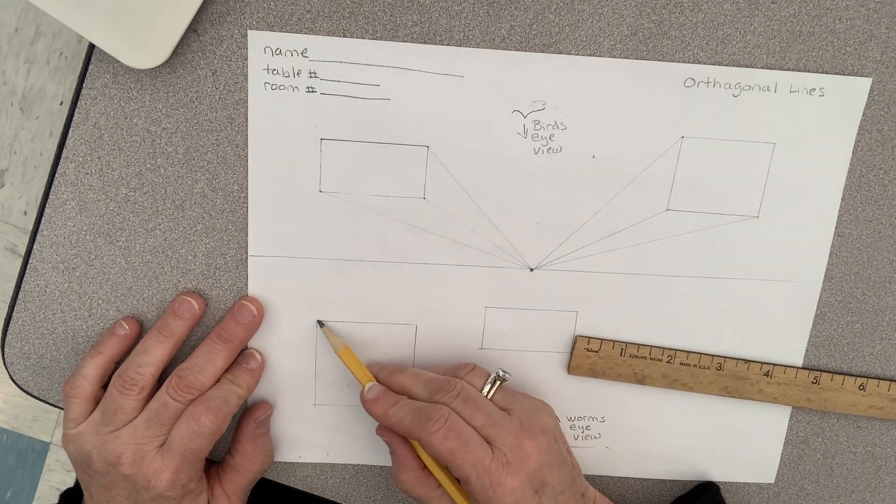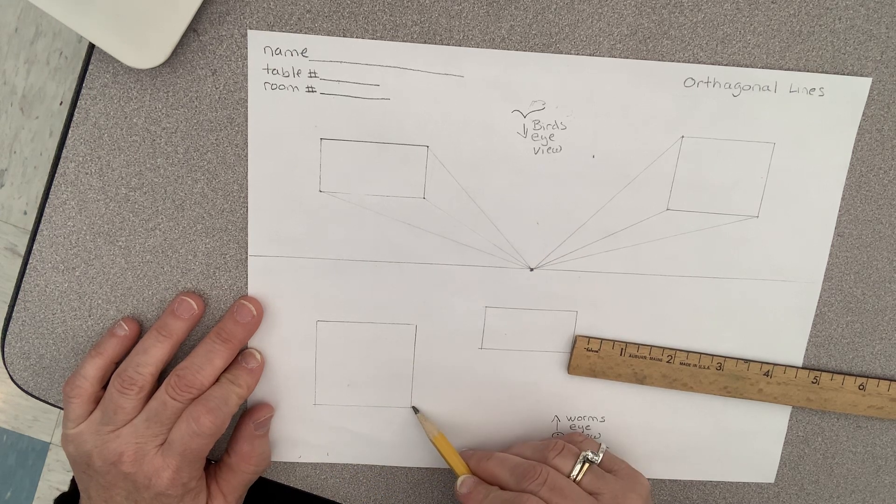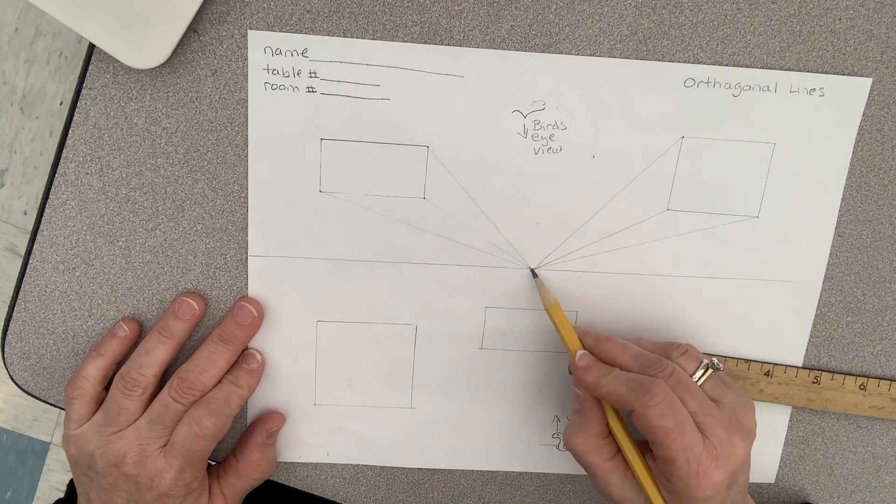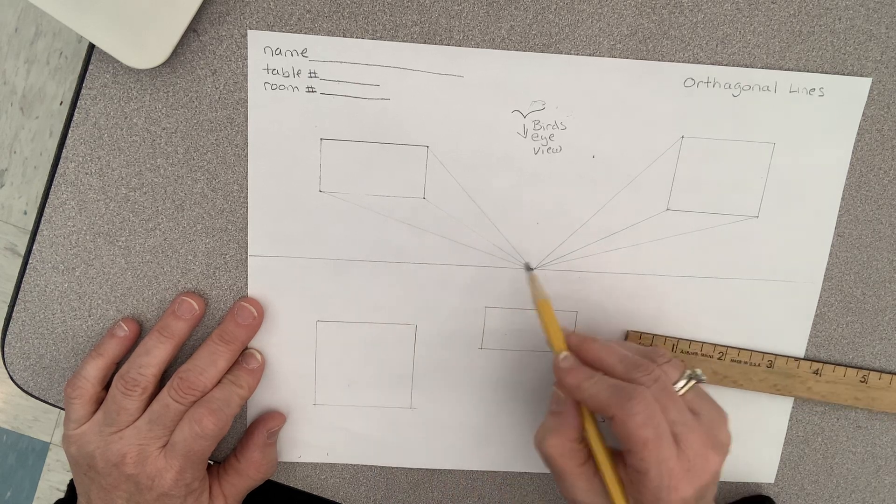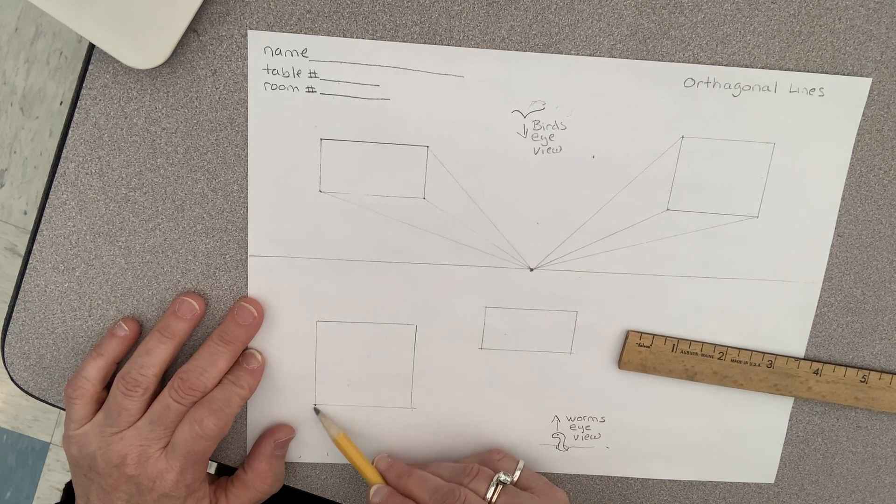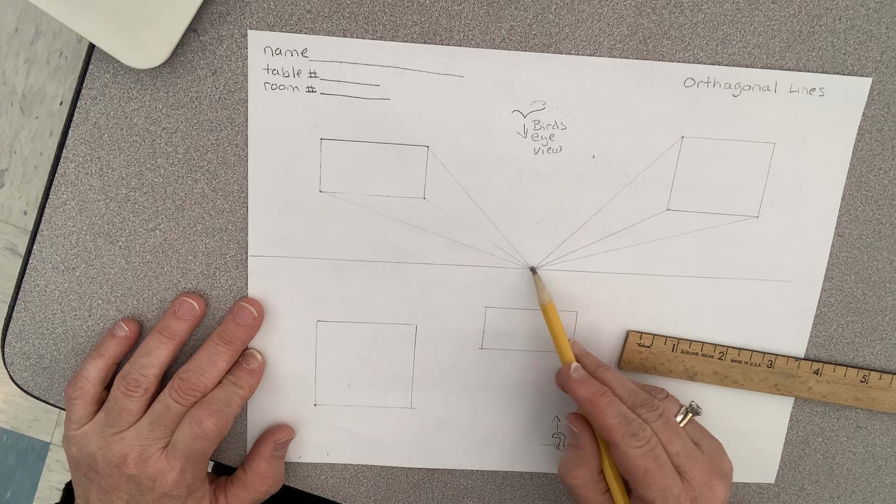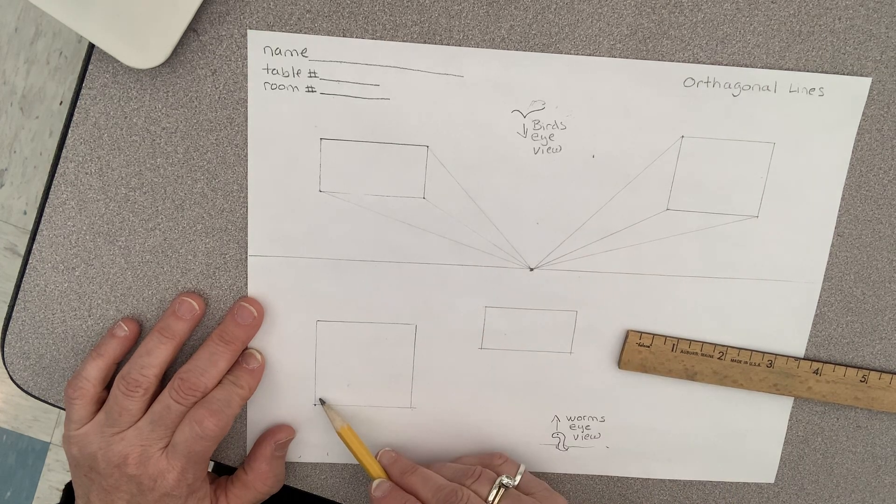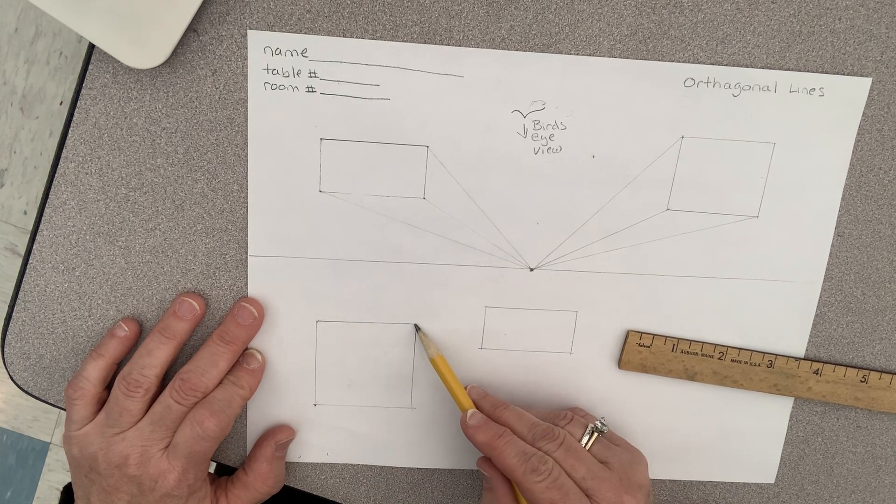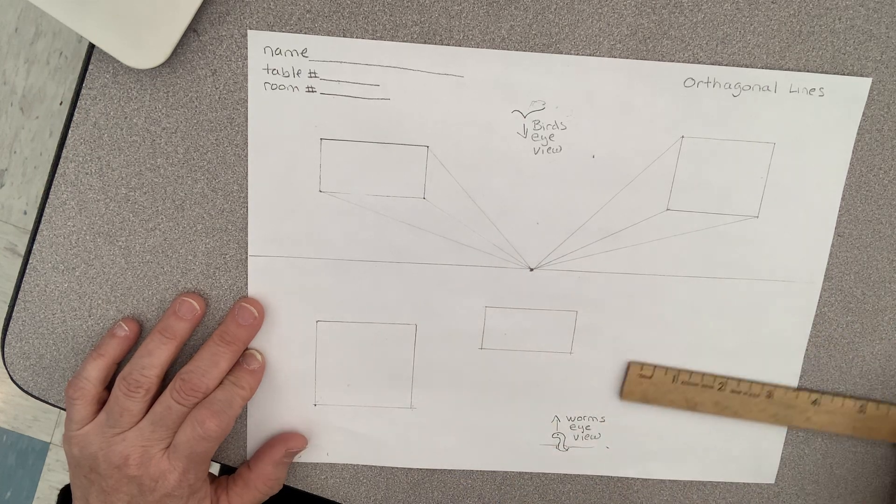Now I'm gonna do this one. Remember we only have one vanishing point on the whole page. We're not gonna do from this corner because this corner would go through the square. So I want you to do from this corner and this corner and this corner.